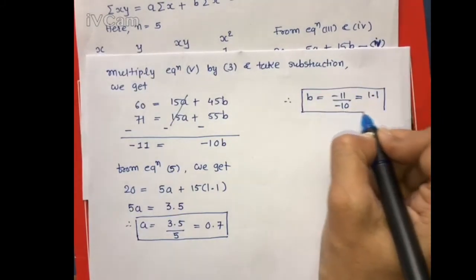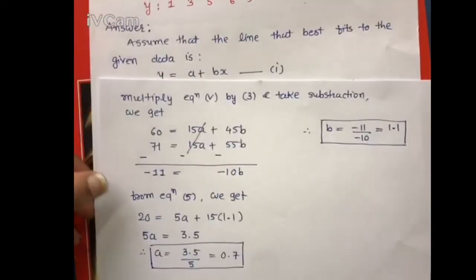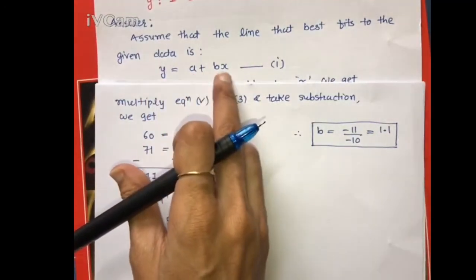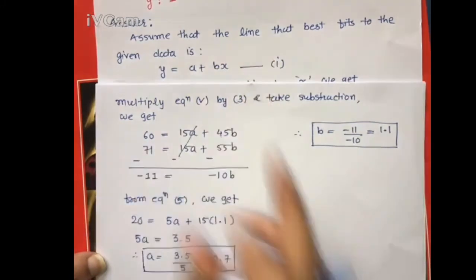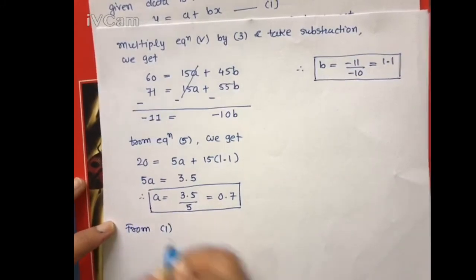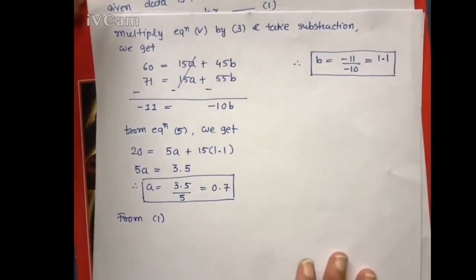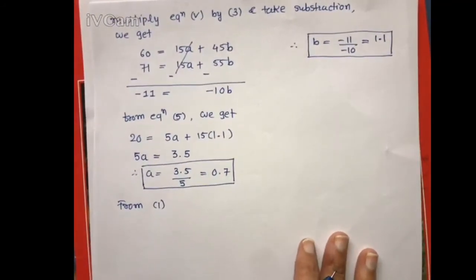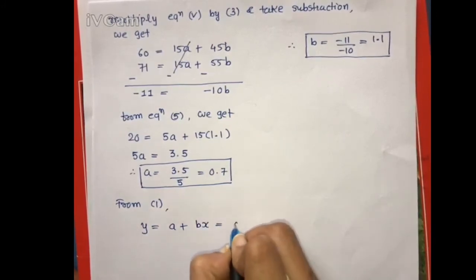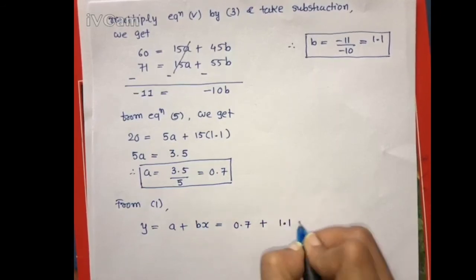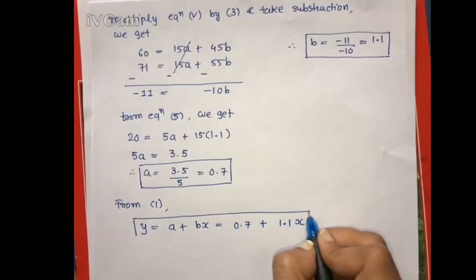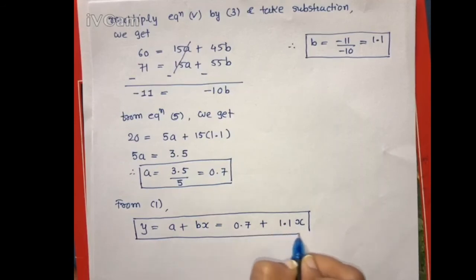Our assumed equation of line is y = a + bx. Substituting the values of a and b from equation 1, we get y = 0.7 + 1.1x. This is our line that best fits the given data of x and y.